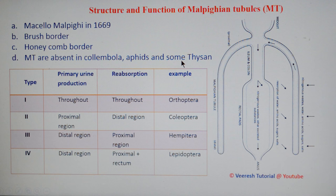Based on primary urine production and reabsorptive regions, there are four types of Malpighian tubules. In Orthoptera, the whole Malpighian tubule is involved in both primary urine production and reabsorption of minerals, ions, water, etc.